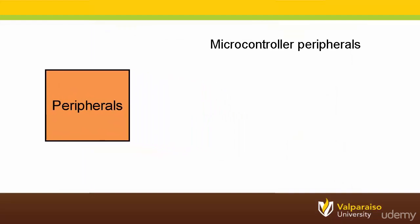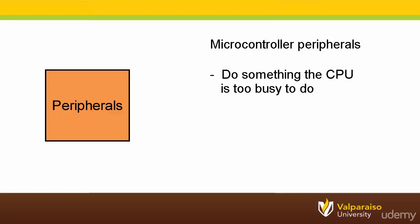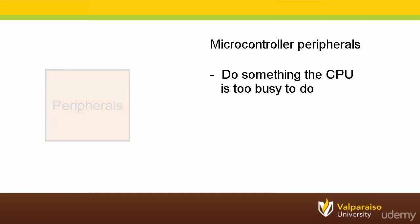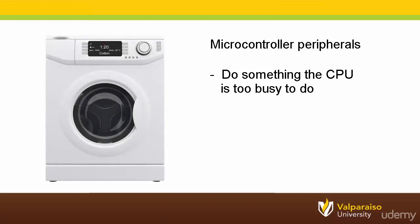In general, peripherals serve one of two functions. First, peripherals can assist a microcontroller's CPU by doing some activity in parallel to the CPU's execution of program instructions. We often say these are tasks the CPU could do, but it is just too busy to do. For example, many people have a washing machine to wash their clothes. They could wash their clothes by hand in a sink, but they choose to use a peripheral — the washing machine — because they already have busy enough lives. Two examples of microcontroller peripherals that fall into this category are timers and communication interfaces.